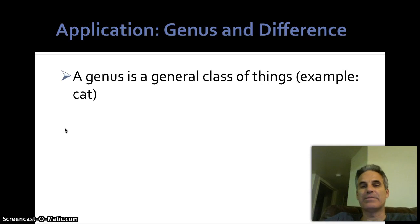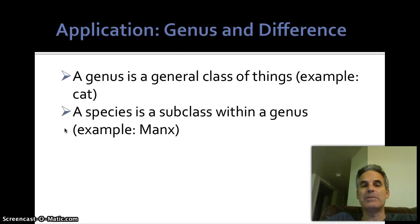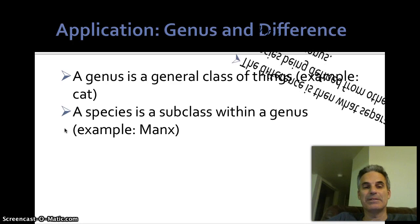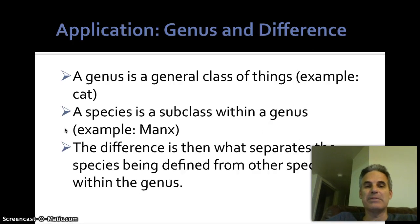A genus is a general class of things. Cat. A species is a subclass within that genus. Manx. So Manx is what we're defining. And we're first going to say a Manx is a type of cat. Now that tells us a little bit about what a Manx is, but it doesn't tell us what differs a Manx from other types of cats. That's the difference. So the difference is what separates the species being defined from other species within the genus. Alright? So a Manx is a type of cat that differs from other cats. Do you know how a Manx cat differs from other cats? I'm going to give you a couple seconds. I'd be playing music in the background right now.